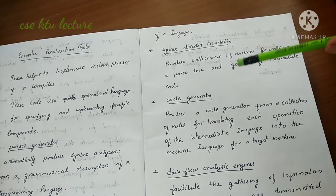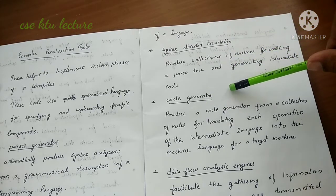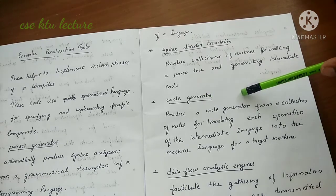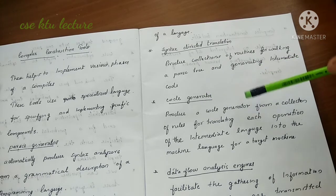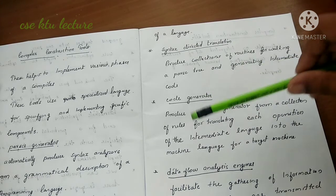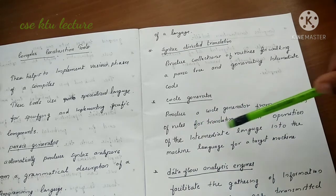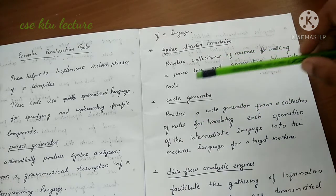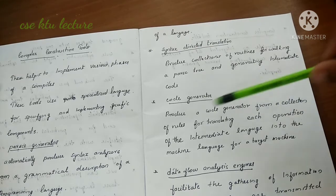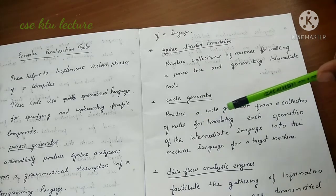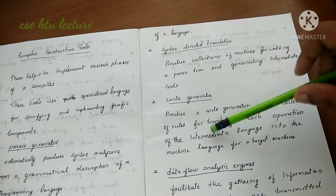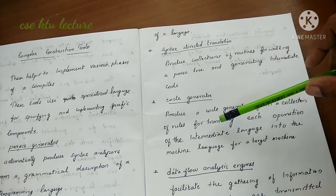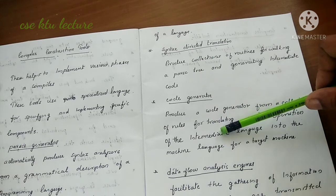The Code Generator translates the intermediate code into machine language, using a collection of rules for translating each operation for the target machine.